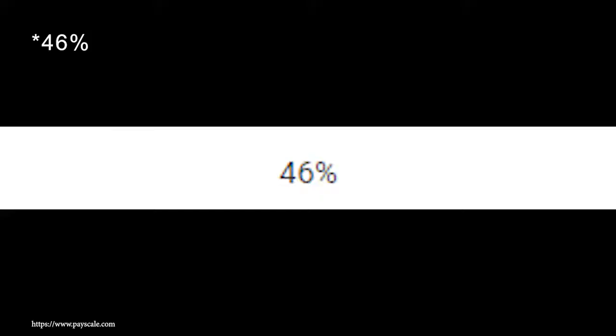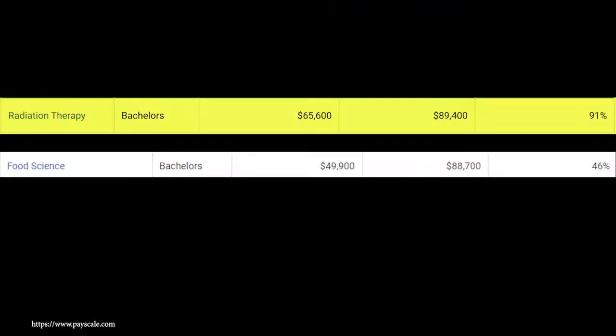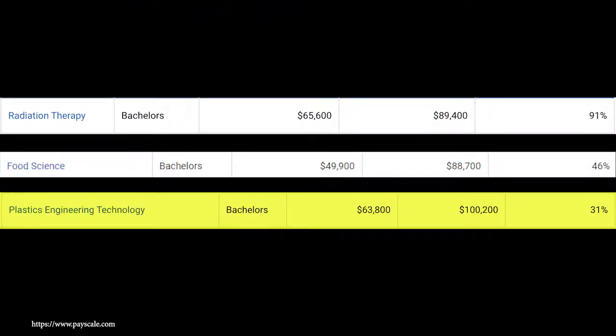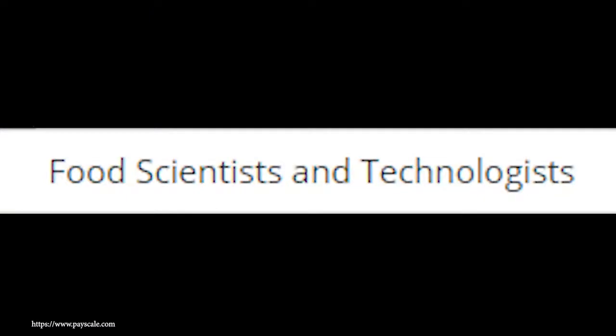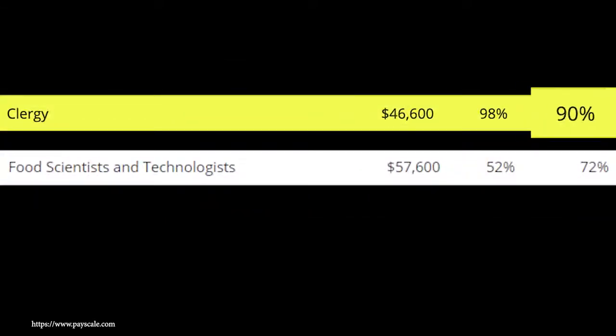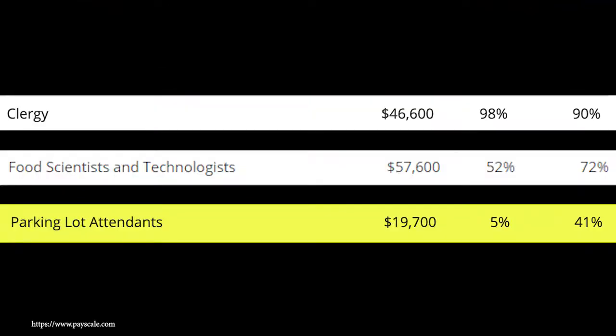When it comes to meaning, this one actually surprisingly scores relatively low. The meaning score is 43%. Radiation therapy has the highest meaning score at about 90%, and plastics engineering technology has a very low score at around 30%. When it comes to job satisfaction, it does seem to score a little bit better. As a food scientist, you have around a 72% job satisfaction score. Clergy has the highest score at around 90%, and parking lot attendance has the lowest score at around 41%. So 72% is on the higher side, and that's relatively good.